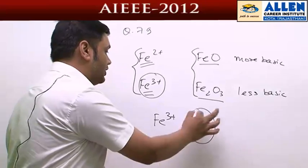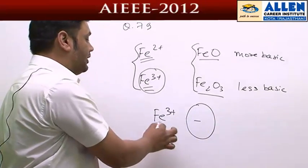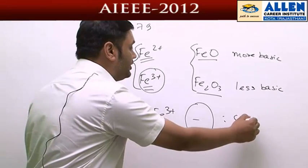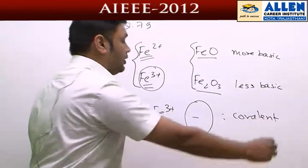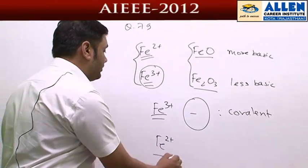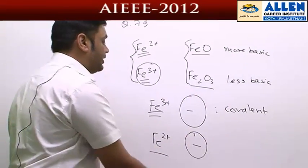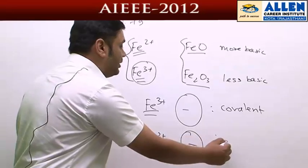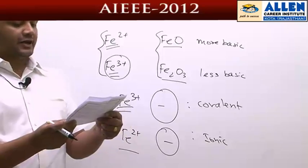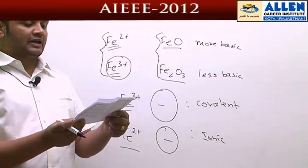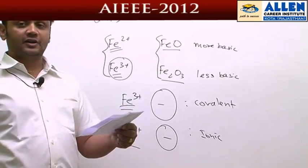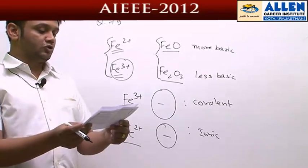Whatever anion is taken is more polarized by ferric ion, so the resulting compound will be more of covalent nature. Whereas ferrous has lesser polarizing power for a given anion, so it will be more towards ionic character. The third option is correct - ferrous compounds are relatively more ionic. But since we are asked for the incorrect statement, this is not the matched option.